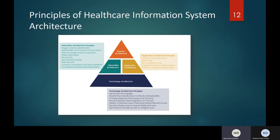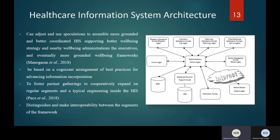Various business models are depicted in this diagram. The first model, business architecture, consists of business direction, stakeholders, functions, and information. The second model, information architecture, consists of the data model, information flows, and databases. The third model, application architecture, consists of applications and their integration. The information architecture model has principles such as single customer identification, customer context points, data accessible across the business, timely information, data reuse, single data master, data security, common data vocabulary definitions, and centralized analytical data.